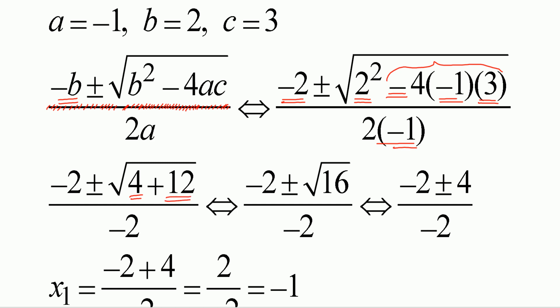So you get negative 2 plus or minus square root of 4 plus 12, divided by — the whole thing divided by negative 2. Don't forget: it is the whole thing divided by 2a. And a is negative 1, so 2 times a becomes negative 2. What is 4 plus 12? 16. So negative 2 plus or minus 16, divided by negative 2.